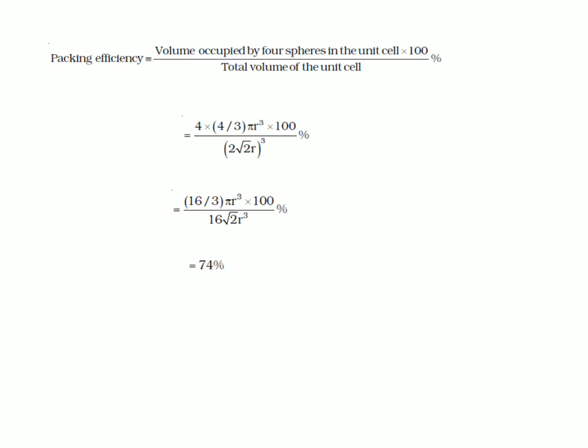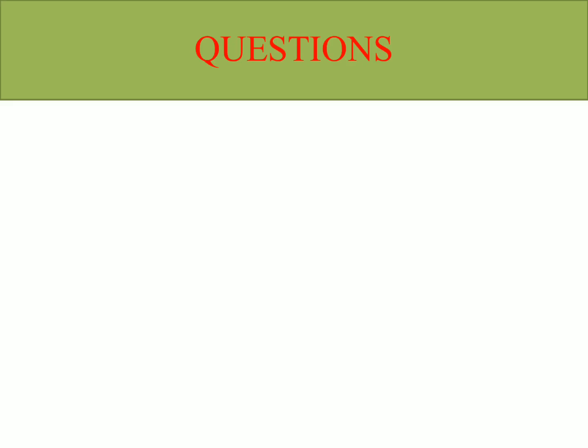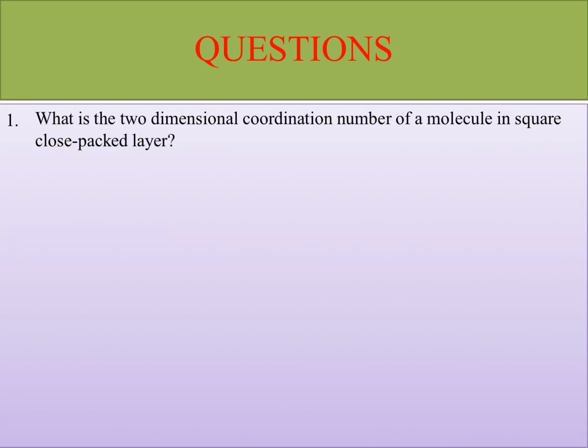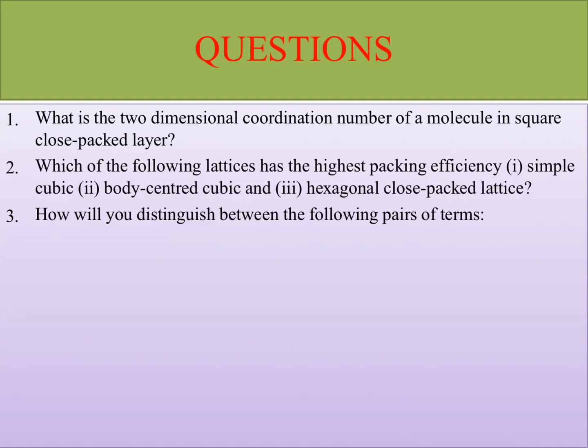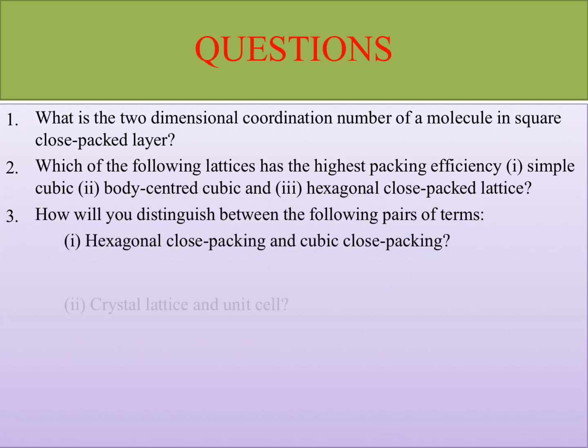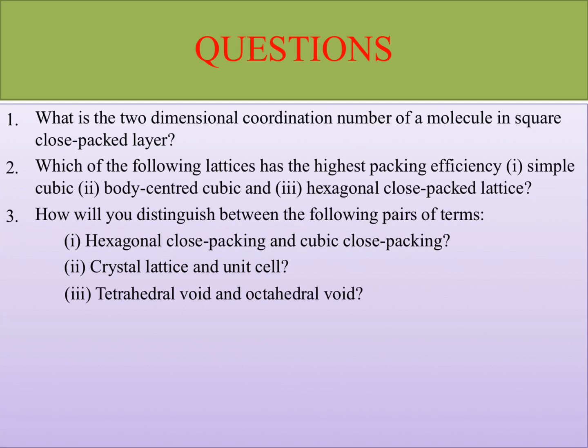To summarize: packing efficiency is maximum in FCC at 74%, followed by BCC at 68%, and simple cubic at 52.38%. This is very important from a competitive exam point of view. The topics covered today are: close packing and coordination number, triangular voids, tetrahedral voids, octahedral voids, 3D close packing with AA, ABAB, and ABCABC type patterns, and packing efficiency for all three unit cell types.